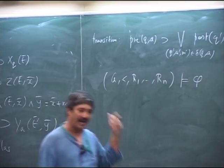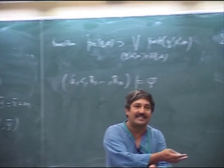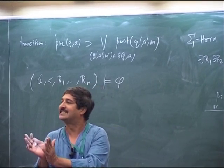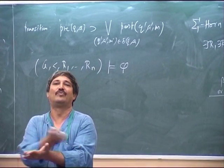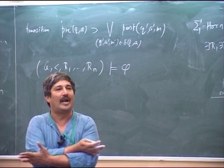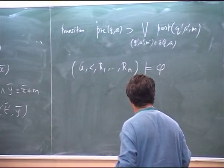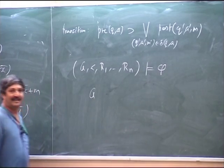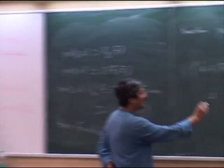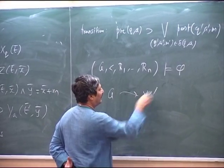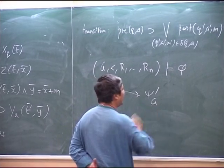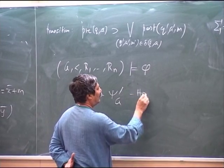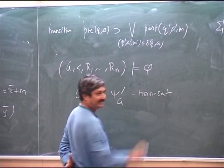I am given a structure where I have this interpretation for the relations, and I have a first order horn sentence and I want to check whether it is true in this structure or not. What would I do?